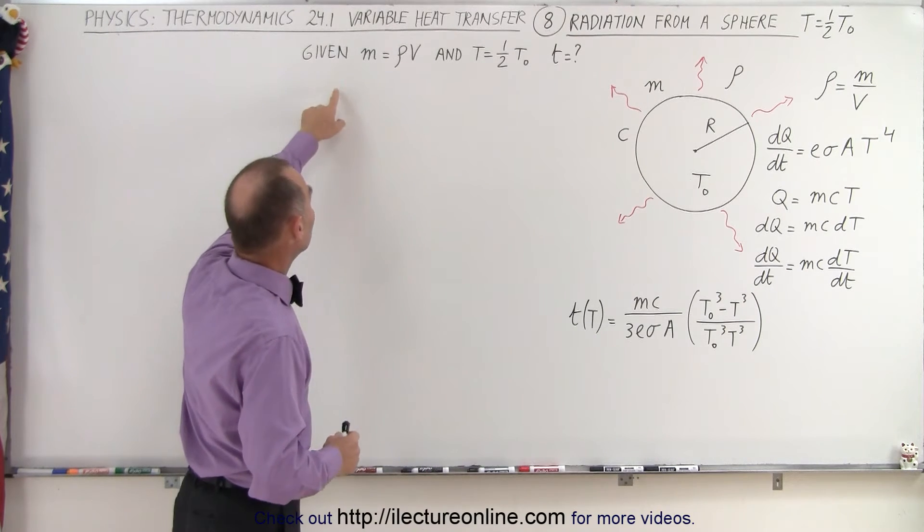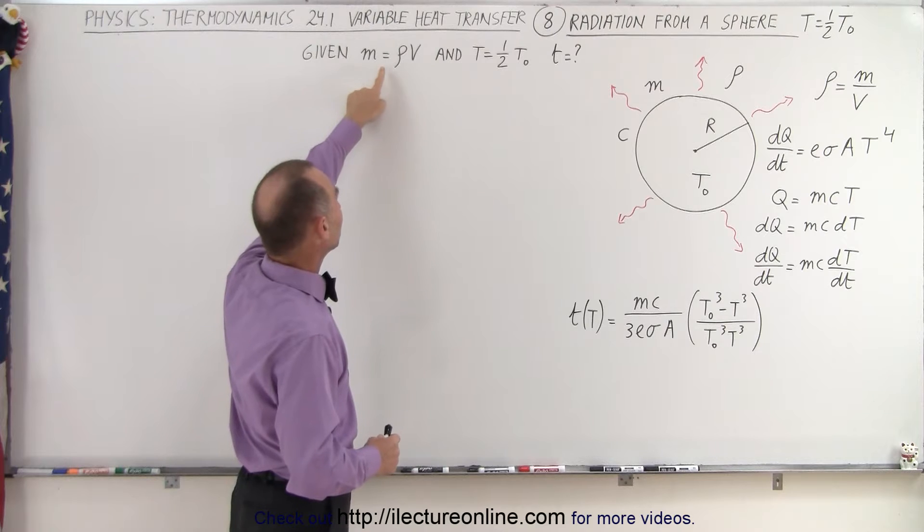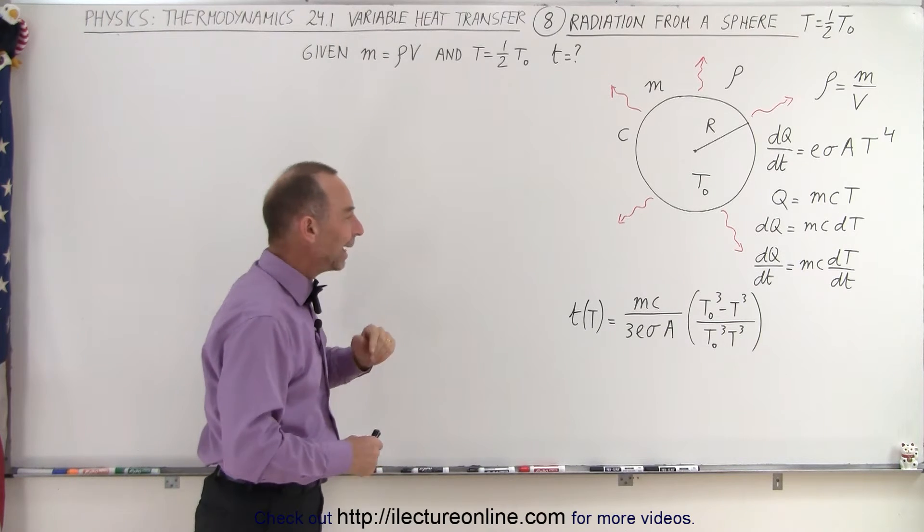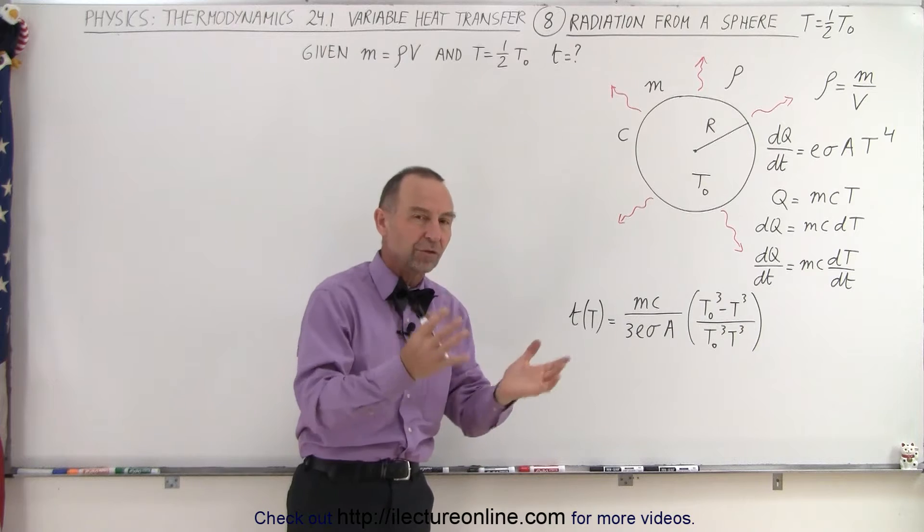We're going to simplify the equation by assuming that the mass of the object is equal to the density times the volume, and that way we can get rid of the expression of the surface area.